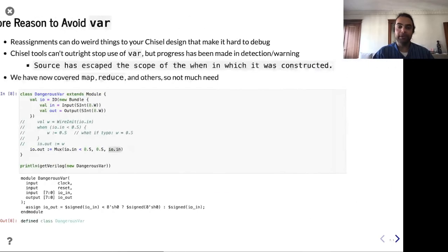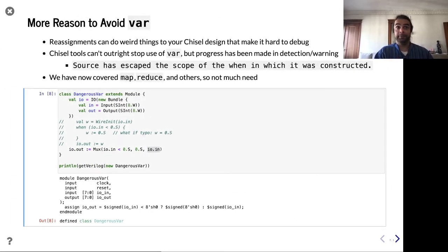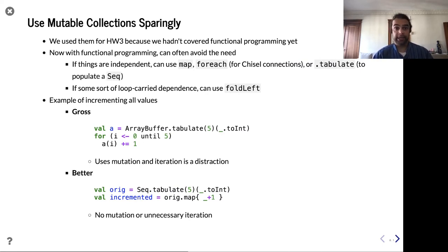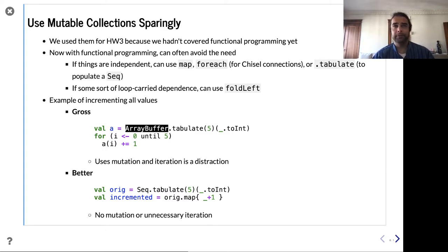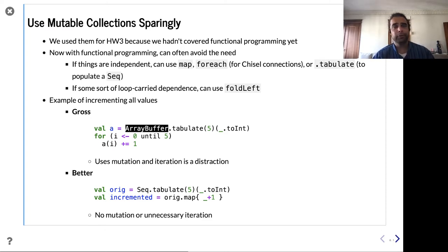Similarly to avoiding var are mutable collections. You can have a mutable collection like an ArrayBuffer, which you can change the values of, and reference it with a val. Sometimes you do need a mutable collection — we encouraged you to use them for homework 3 since we hadn't covered functional programming yet. But it turns out you can often avoid it. It's not always something you need to do.